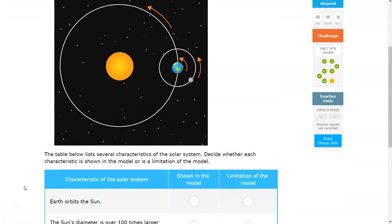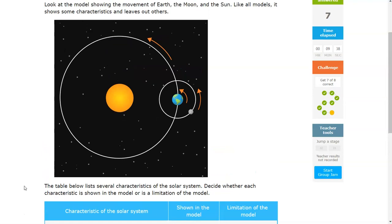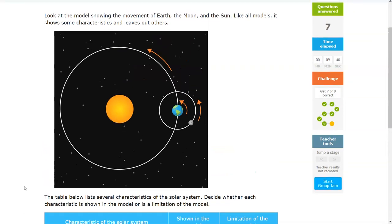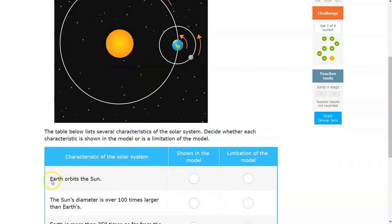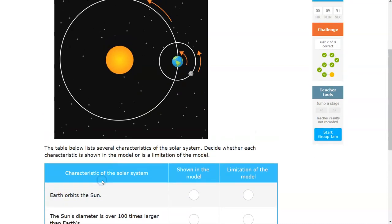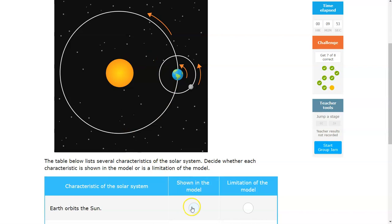And this very final question, it's going to ask you what exactly are the limitations of the model or what is exactly shown in the model to help you understand what models are. So once again, does it show the fact that Earth orbits the Sun in this model? Either choose yes or no.